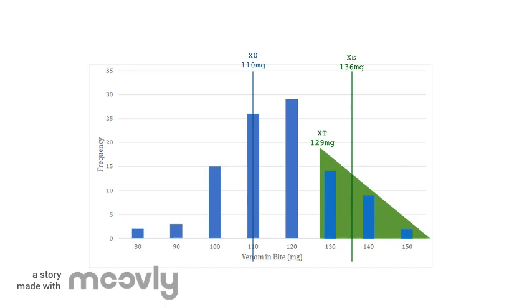The difference between this mean and that of the original population is known as the selection differential, represented by this yellow bar labeled with an S. Now that we have all of the data from the initial population analyzed,